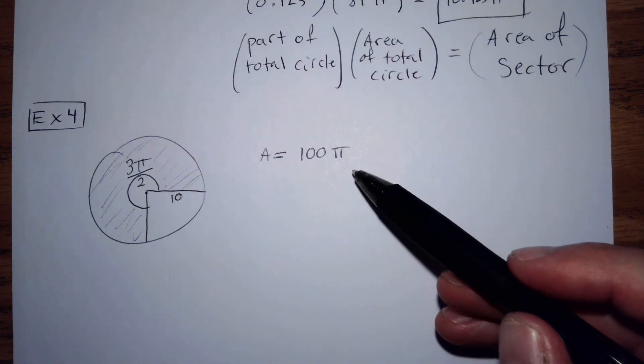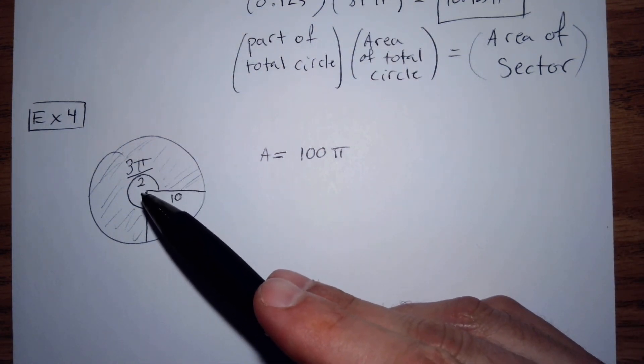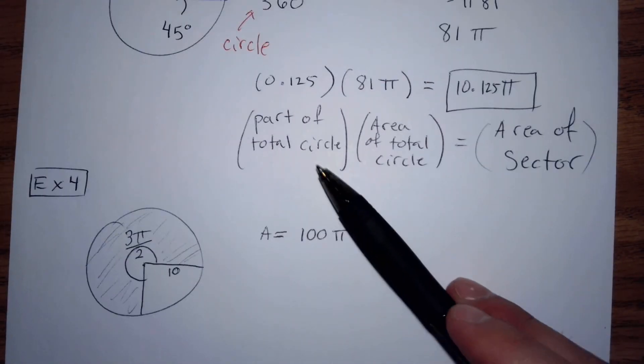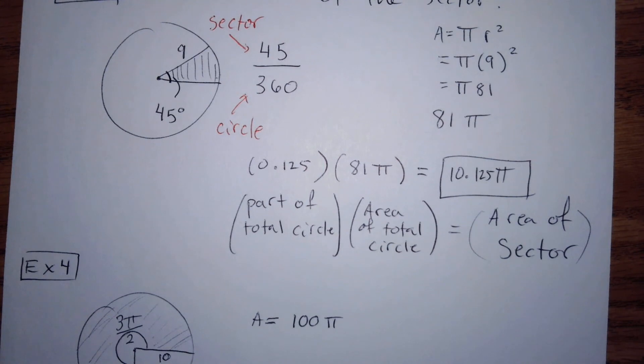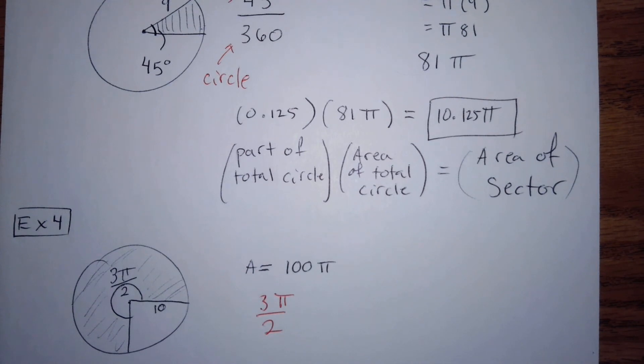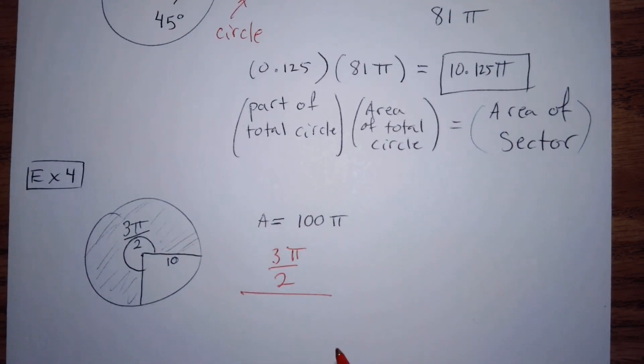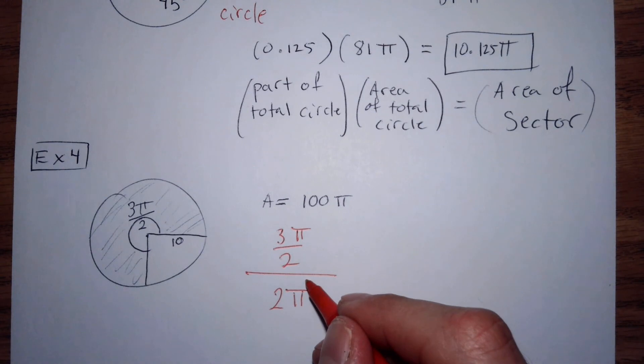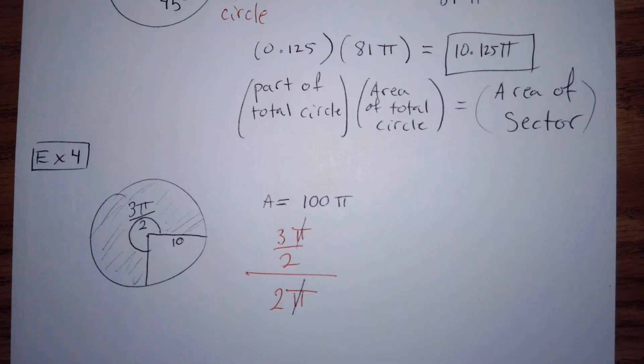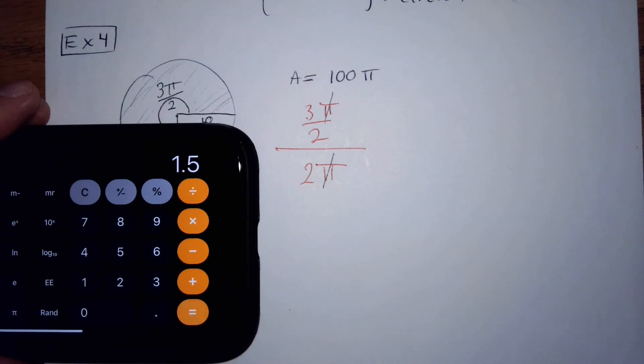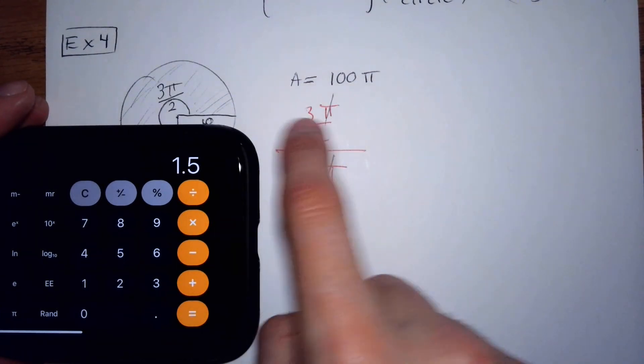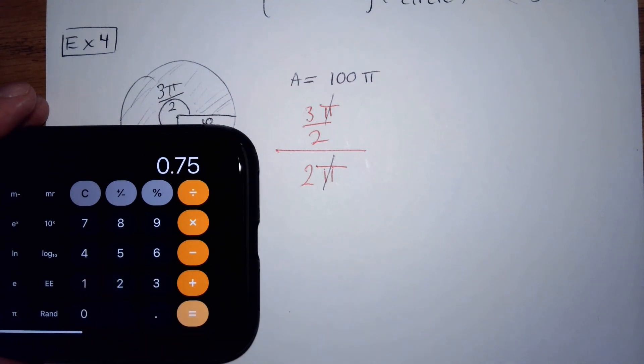So that says 3 pi over 2? Correct, 3 pi over 2. So to get this part, part of the circle, we're going to do the sector, which was 3 pi over 2, divided by the entire circle, which would be 2 pi. The nice thing here is that the pi's will always cancel out. So we can just do 3 divided by 2, and then divide by 2 again, and we get 0.75.